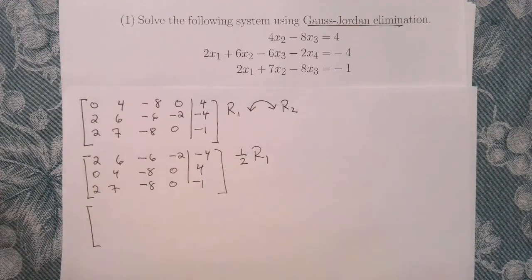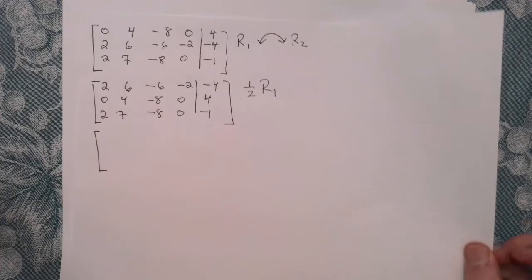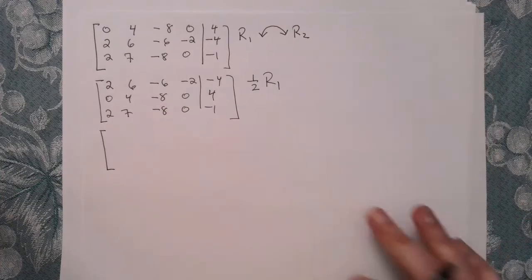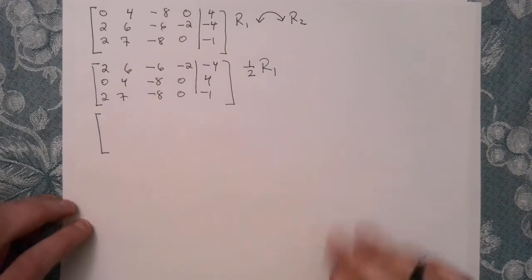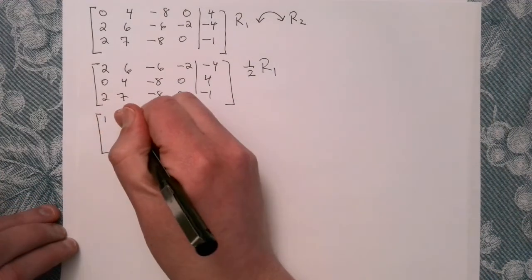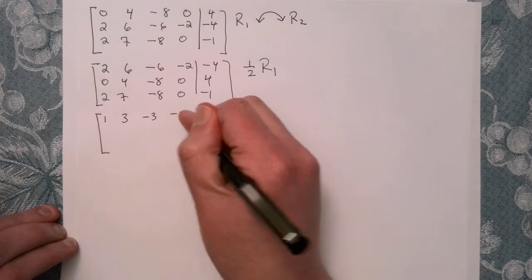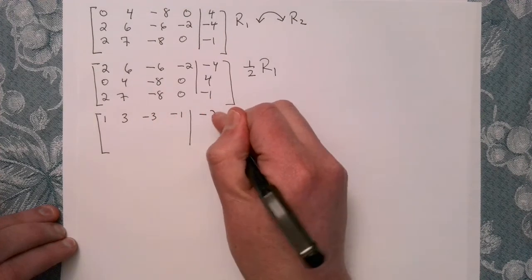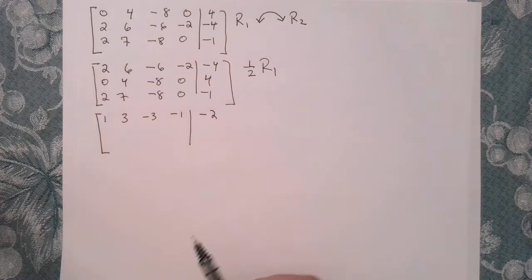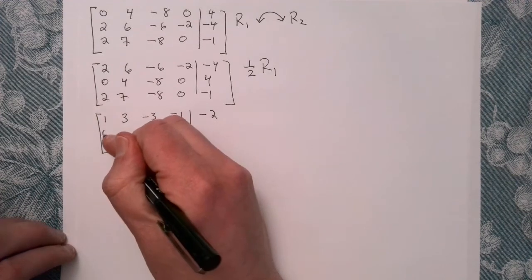Taking one half of the first row gives us the following. We have 1, 3, minus 3, minus 1, minus 2. Row two and row three stay the same.